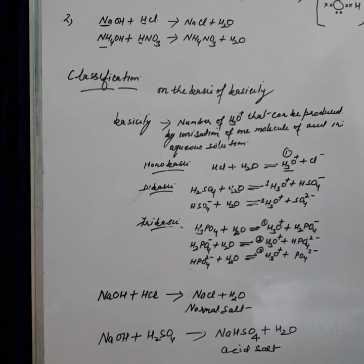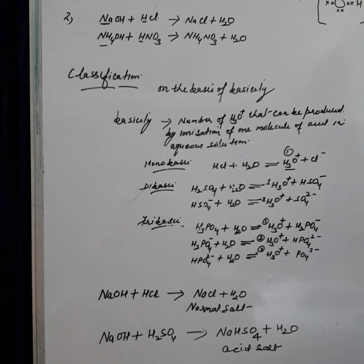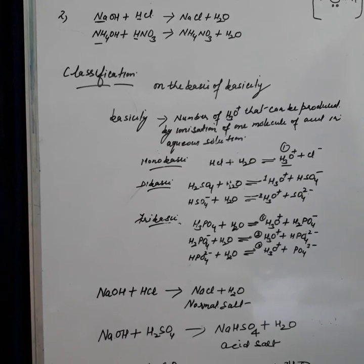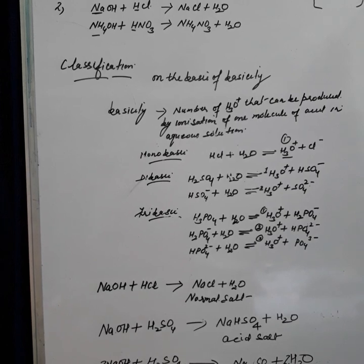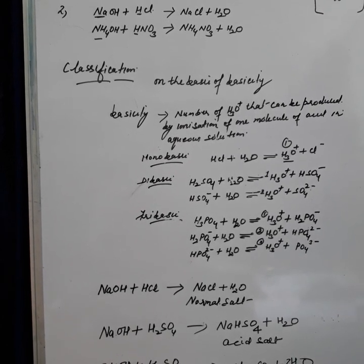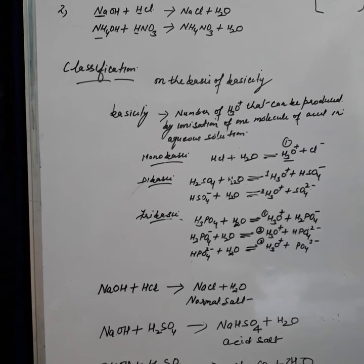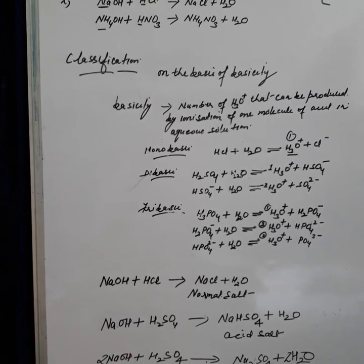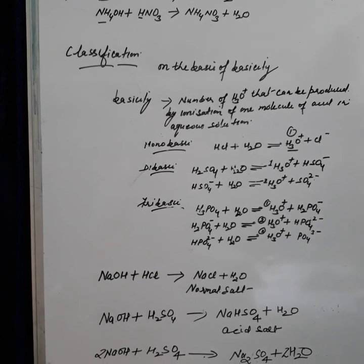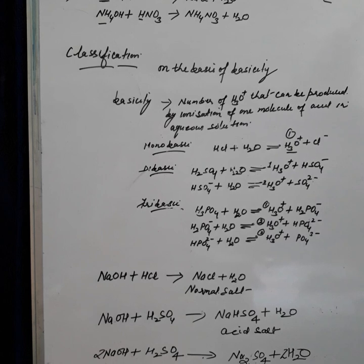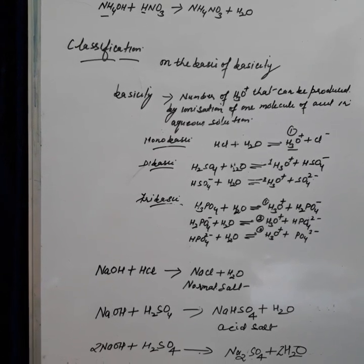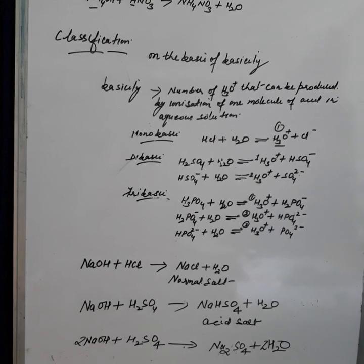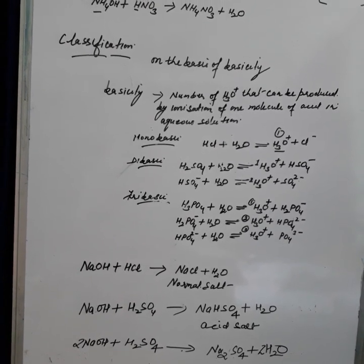An acid is a compound which on dissolution in water furnishes hydrogen ion as the only positively charged ion. For example, hydrogen chloride when dissolved in water forms hydrogen ion plus chloride ion. However, hydrogen ion is unstable and cannot exist independently, so it combines with water to form hydronium ion.